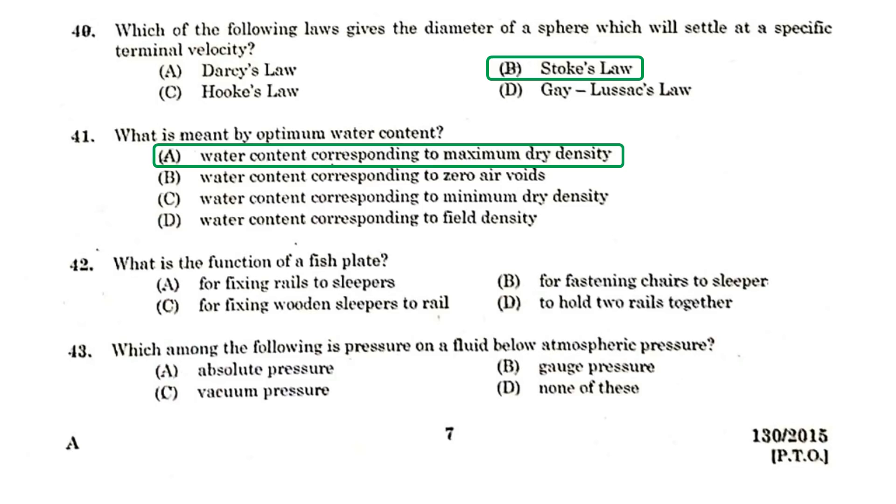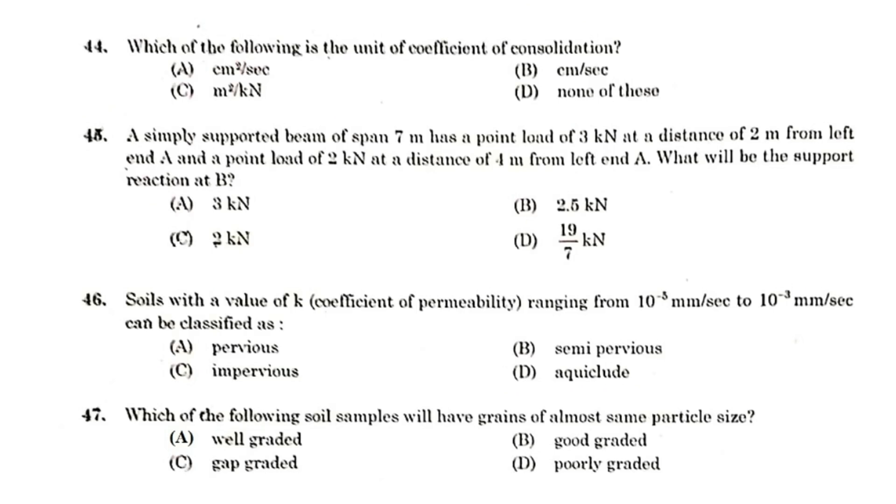What is the function of a fish plate? For hold two rails together. Which among the following is a pressure on a fluid below the atmospheric pressure? It is a vacuum pressure. Which of the following is the unit of coefficient of consolidation? Centimeter square per second.